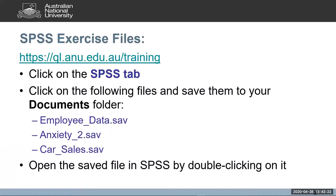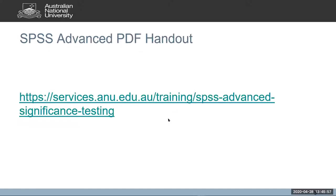If you haven't already got the SPSS exercise files for this class, you can download them at this website. Just click on the SPSS tab and then download the following three files: Employee Data, Anxiety_2, and Car Sales. We will begin with the employee_data.sav file. The PDF handout for this class can be found at this web address, and there will be some extra information in that which you might find handy.